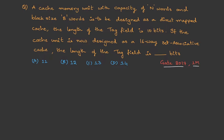Let's solve a question asked in GATE 2017 for one mark. A cache memory unit with capacity of N words and block size B words is designed as a direct mapped cache. The length of the tag field is 10 bits. If the cache unit is now designed as a 16-way set associative cache, what is the length of the tag field? They have given the data for direct mapping and are asking you to convert it to set associative mapping.